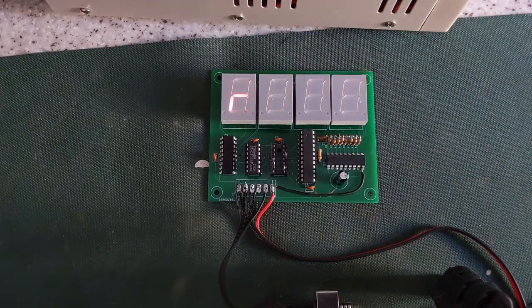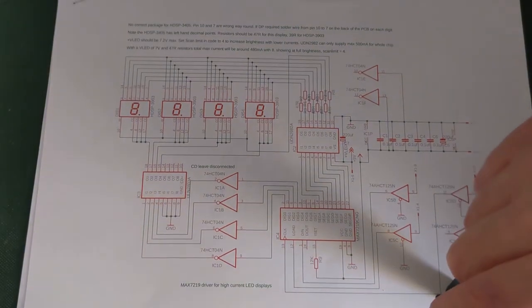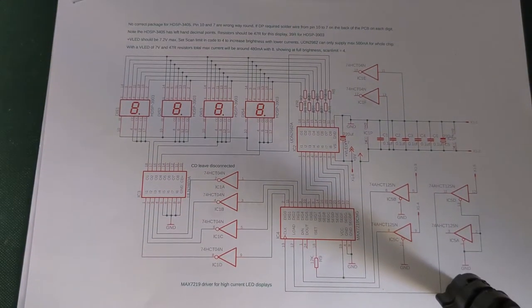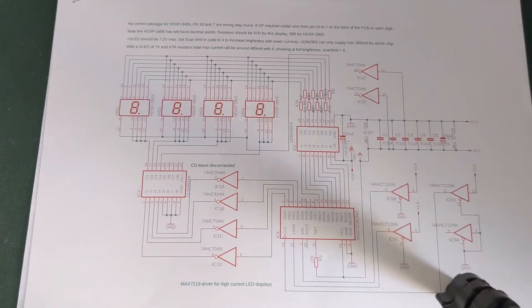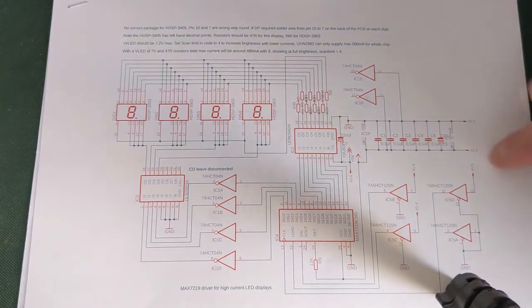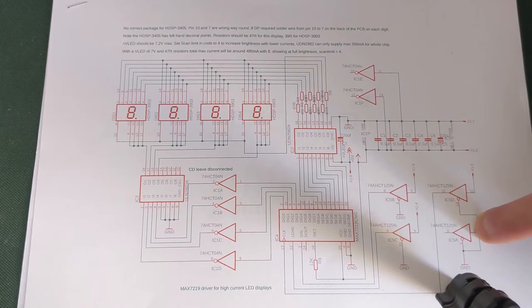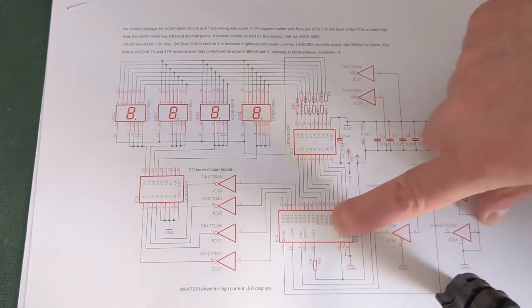Right, I'll just show you the schematic. Hopefully that comes out okay. Let's increase the exposure. That's better. So the circuit consists of inputs which go through a logic level converter to convert the 3.3 volt input to 5 volts because the MAX7219...